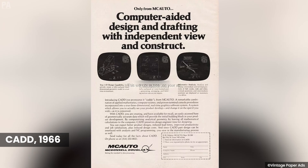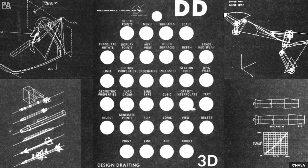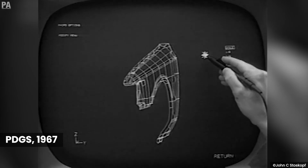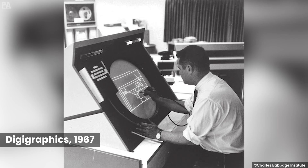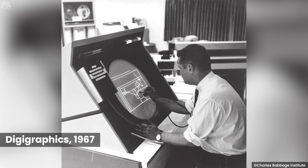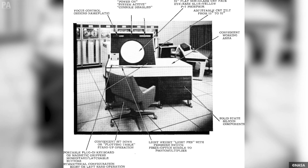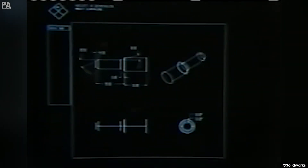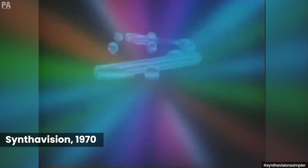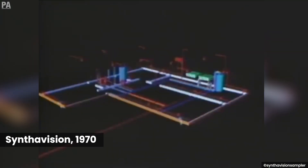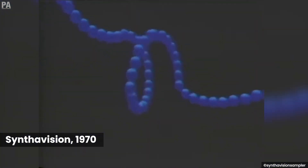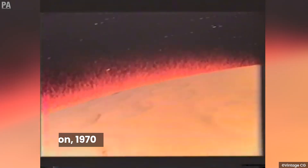The evolution of CAD continued with programs such as CADD by aerospace manufacturing corporation McDonnell Douglas, PDGS, an internally developed CAD system by Ford, and DigiGraphics by ITEK, which was a system sold for the cheap price of $500,000. Breaking free from the boring norms of two-dimensional systems, in 1972, Synthavision was developed by Magi. While technically not a CAD program, it was recognized as one of the earliest 3D visualization programs, creating complex 3D visual effects and animations for movies such as Star Trek and Tron.